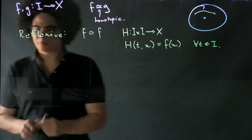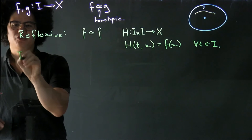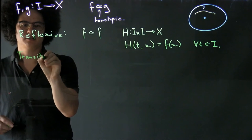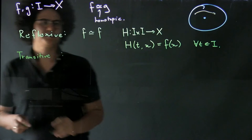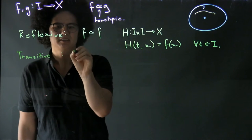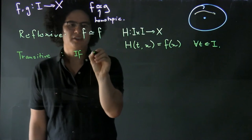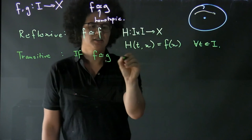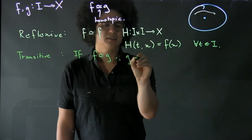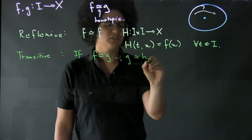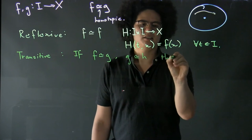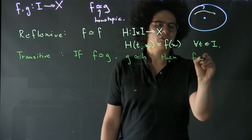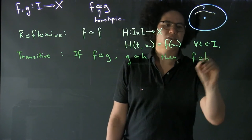Okay, the next property that we need to show is that it's transitive. So we want to show that if F is homotopic to G and G is homotopic to H, then F is homotopic to H.